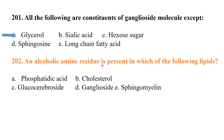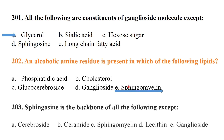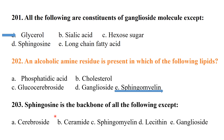An alcoholic amine residue is present in sphingomyelin. Sphingosine is the backbone of all of the following EXCEPT — the options include cerebroside, ceramide, sphingomyelin, lecithin, and ganglioside. The answer is lecithin, because sphingosine is absent in lecithin.